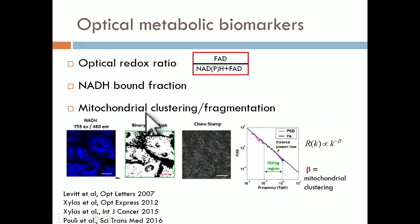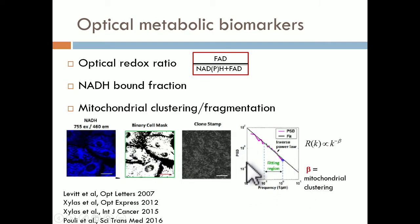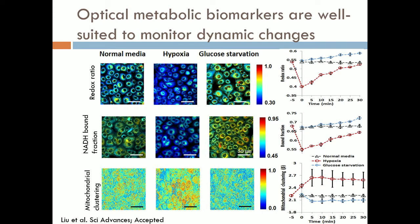A third biomarker is mitochondrial clustering or fragmentation, a metric we've been developing for about 10 years. We rely on NADH two-photon excited fluorescence intensity images, apply signal processing and 2D Fourier analysis, and extract a parameter beta correlated to the level of mitochondrial fragmentation. When beta goes up, mitochondria become more fragmented; when beta goes down, mitochondria become more highly organized. We can monitor all three parameters in 2D cultures exposed to metabolic perturbations such as hypoxia and glucose starvation, observing how each parameter changes dynamically in response.